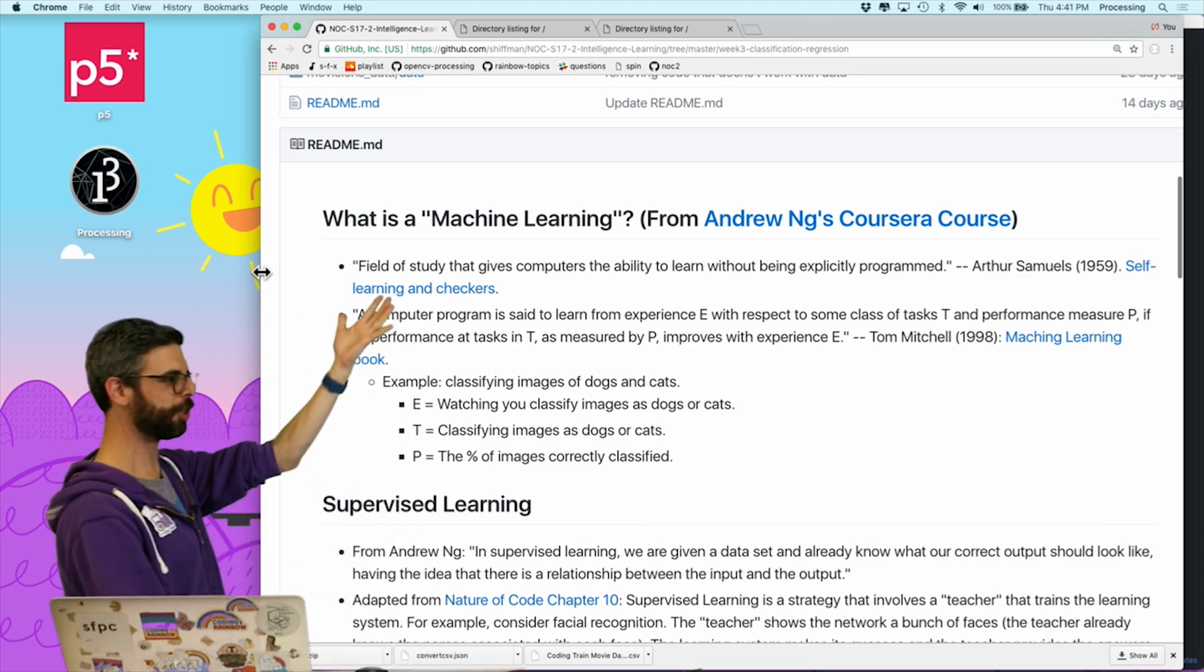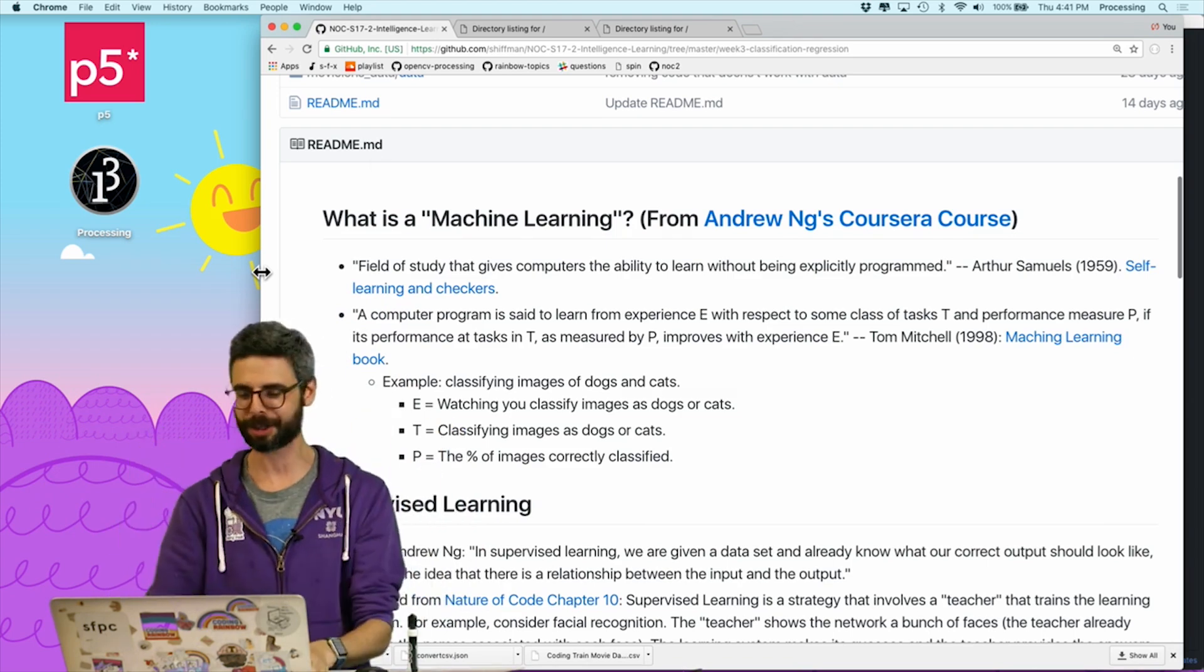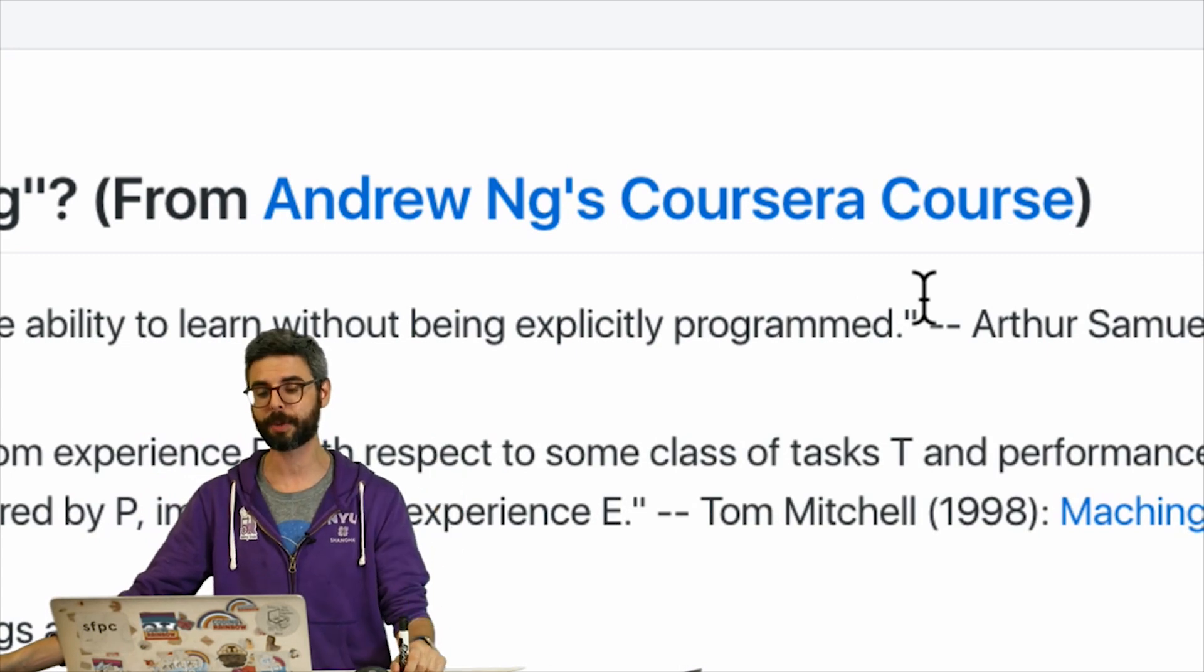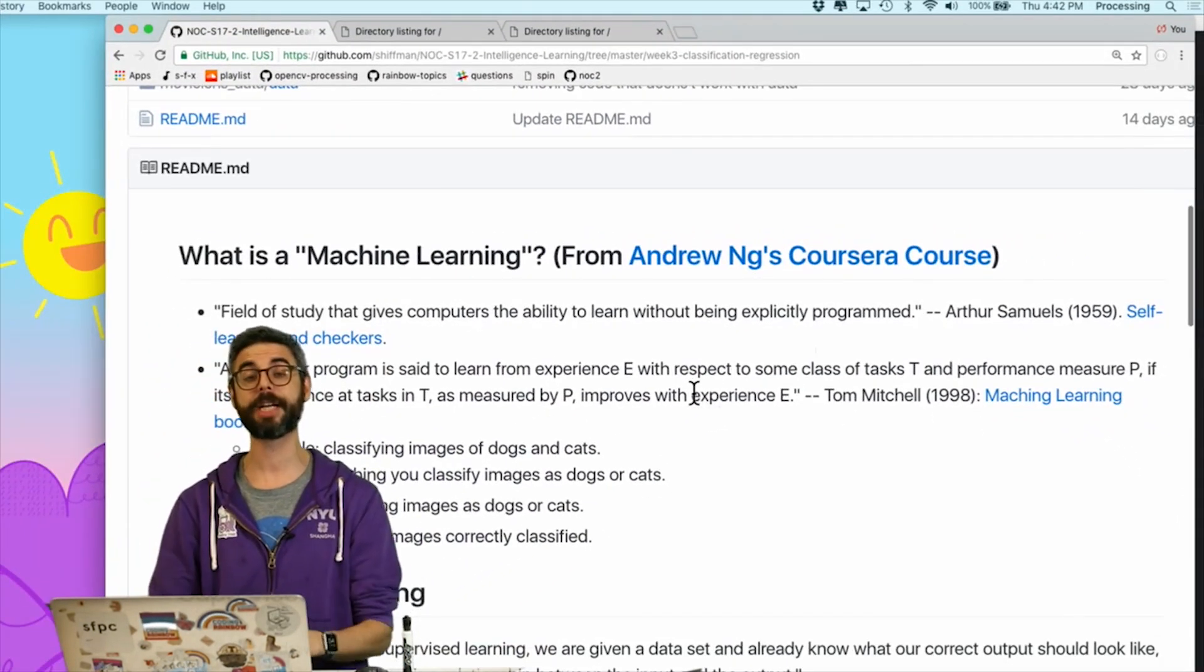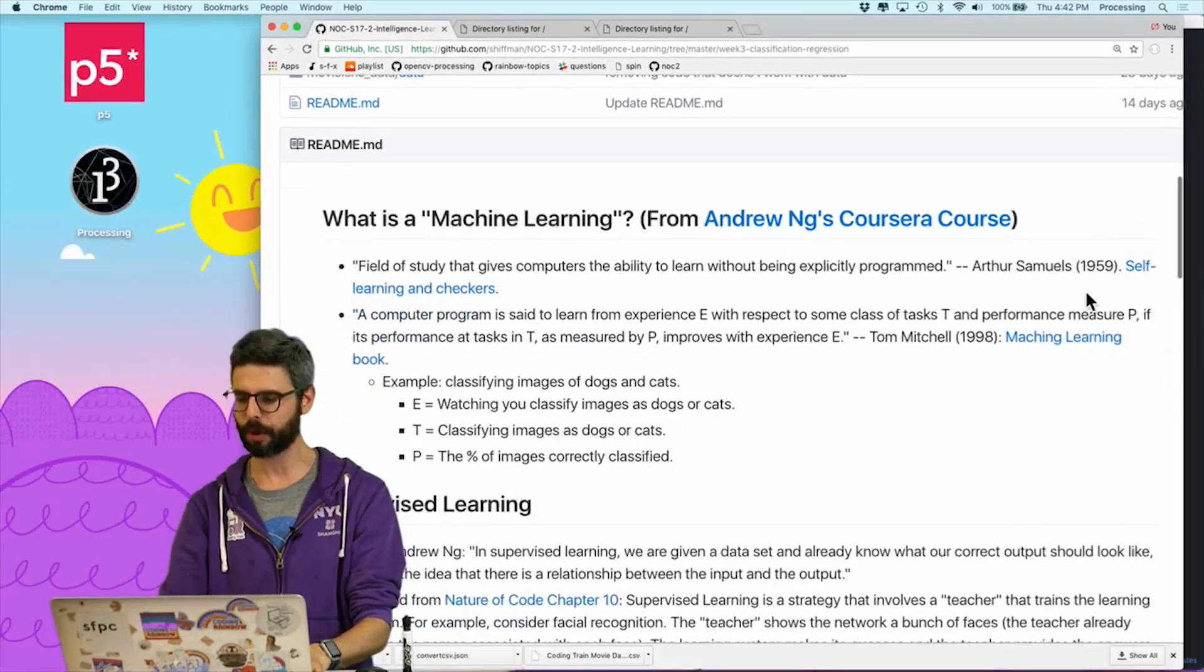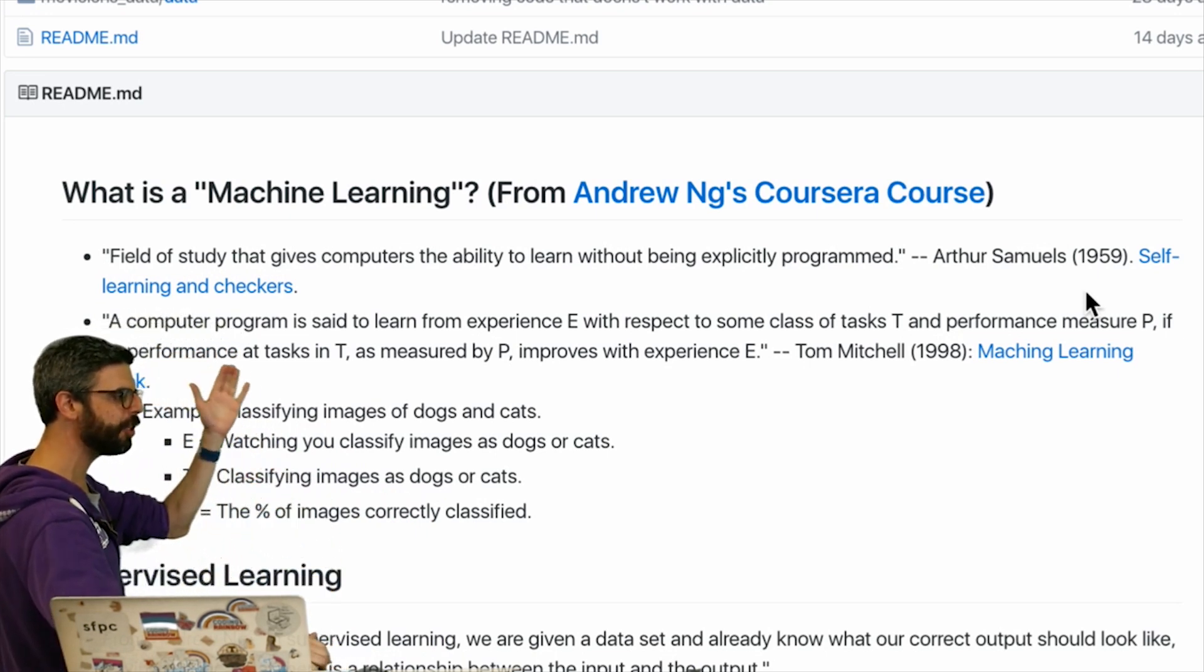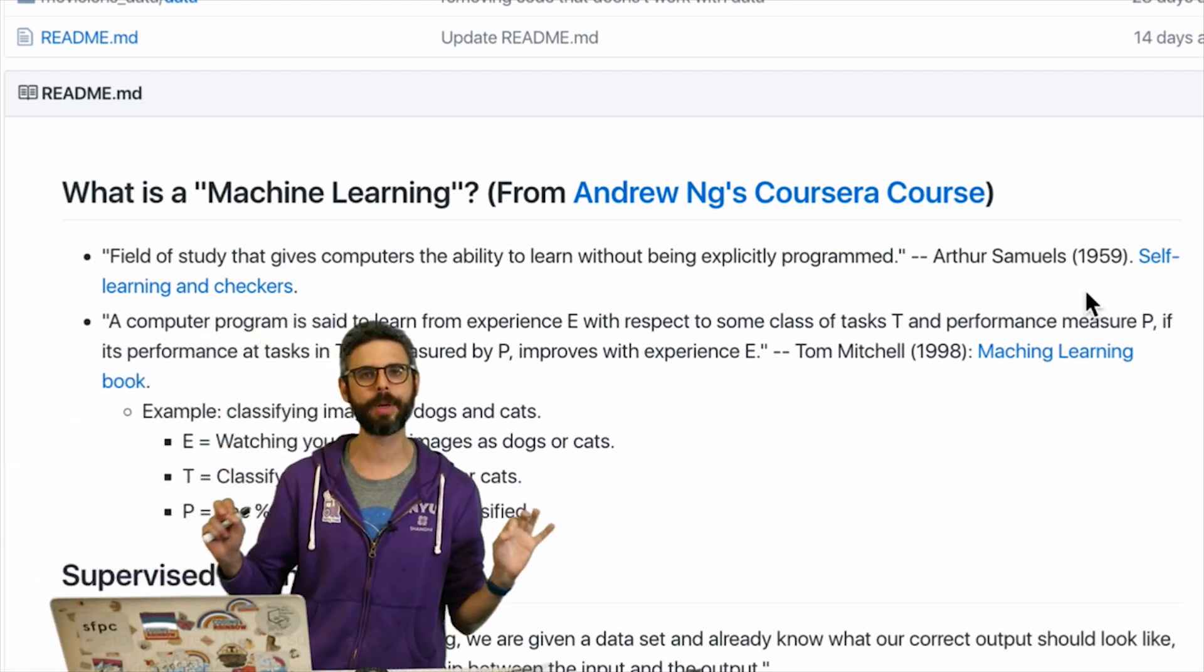So what is machine learning? So first of all, one thing that I might suggest for you if you want to watch some videos about somebody who really knows what they're talking about, I would suggest Andrew Ng's Coursera course. A lot of my knowledge and inspiration has come from that course. And Andrew Ng does a good job of giving a nice introduction to machine learning and two particular references. One is this definition, this quote from Arthur Samuel, who is a pioneer in the world of machine learning, defining machine learning as a field of study that gives computers the ability to learn without being explicitly programmed.